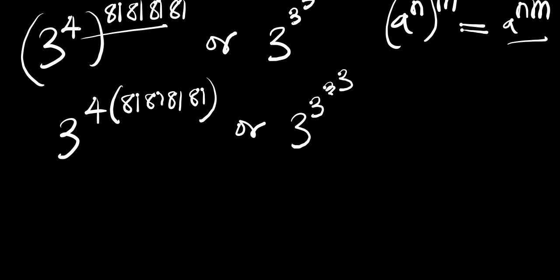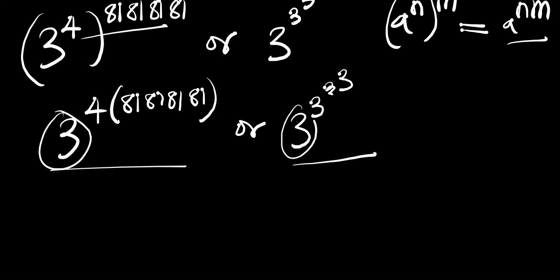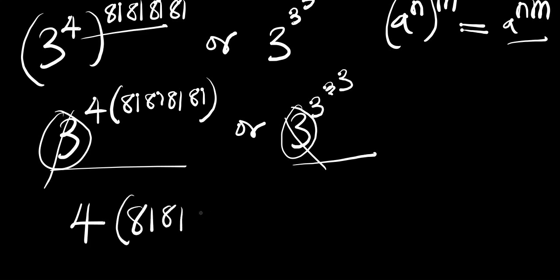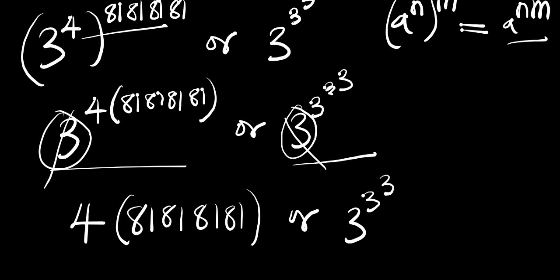So let's proceed. If you look at these two numbers, the bases are the same — we have 3 here and 3 here. So we can eliminate these two bases. We are going to be left with 4 times 81, 81, 81, 81. Or we have 3 to the power of 3 to the power of 3.